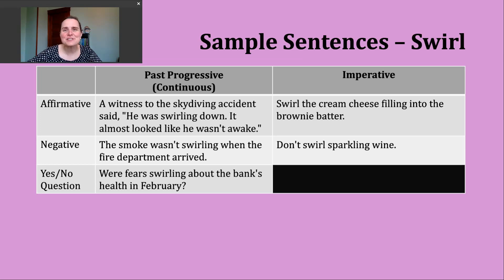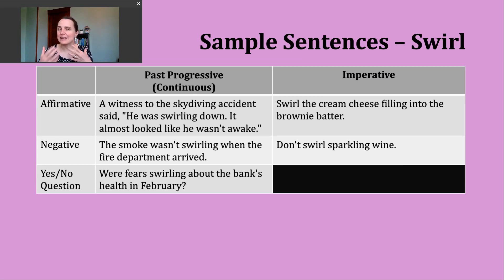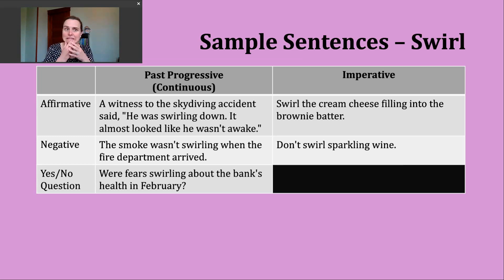To make yes or no questions in the past progressive, start with was or were, then your subject, then the -ing form of the verb. Here's an example: were fears swirling about the bank's health in February? That captures the idea of people sharing and passing around feelings of worry — like, is this bank in trouble? Is everything okay?